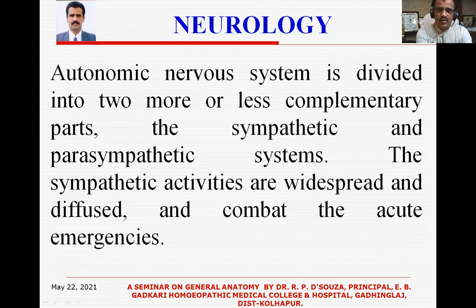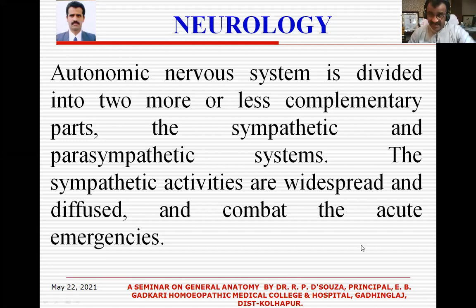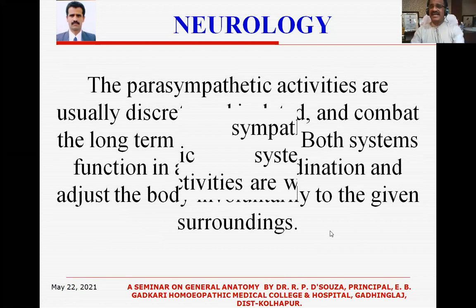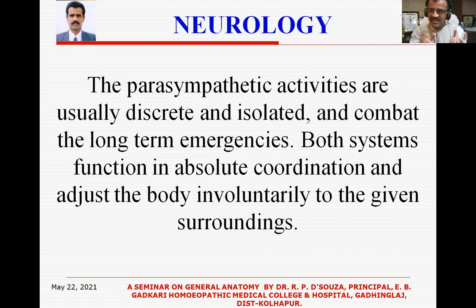The autonomic nervous system is divided into two more or less complementary parts — sympathetic and parasympathetic. They are not opposite to each other; they are complementary. Sympathetic activities are widespread and diffused and combat acute emergencies, whereas parasympathetic activities are usually discrete and isolated and combat long-term emergencies. Both systems function in absolute coordination and adjust the body involuntarily to the given surroundings.